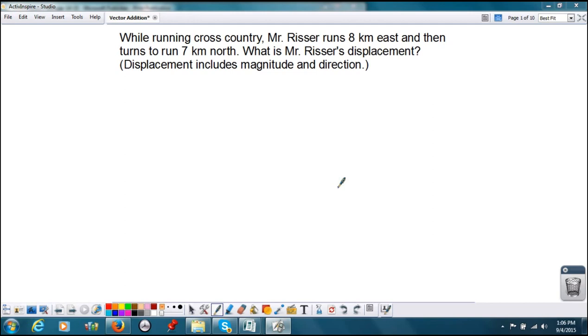It says Mr. Risser runs 8 kilometers east. Okay, so we're going to use our typical directions here: north, south, east, and west. Drawing our picture, we see that Mr. Risser runs 8 kilometers east. So I'm going to make the starting point right here, draw an arrow going to the east, and label it 8 kilometers.